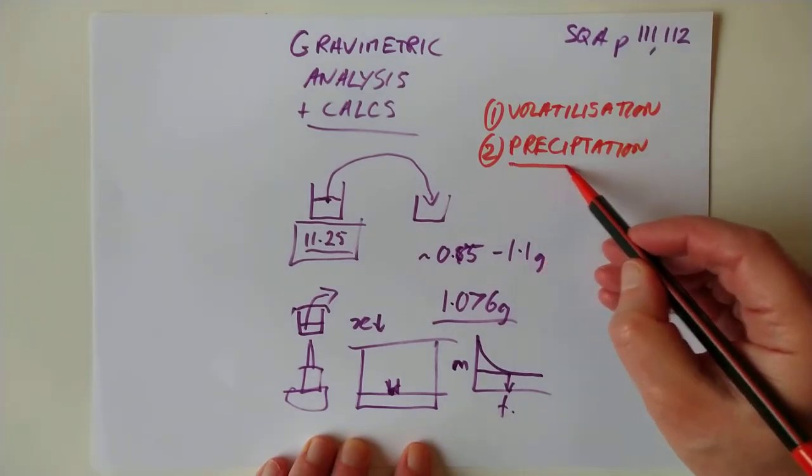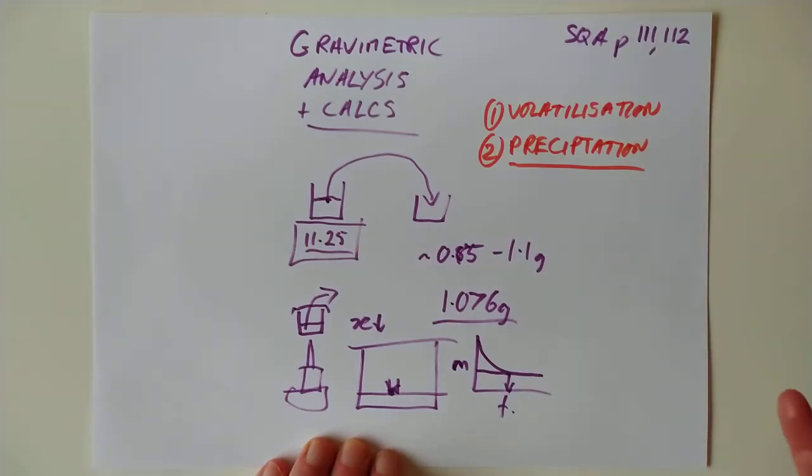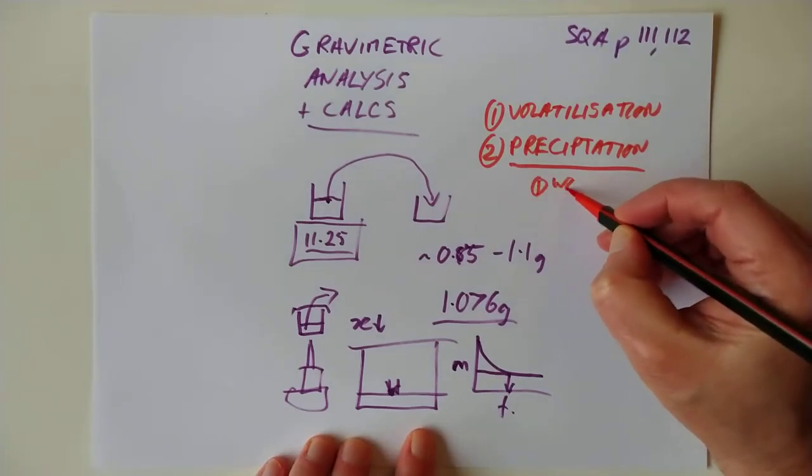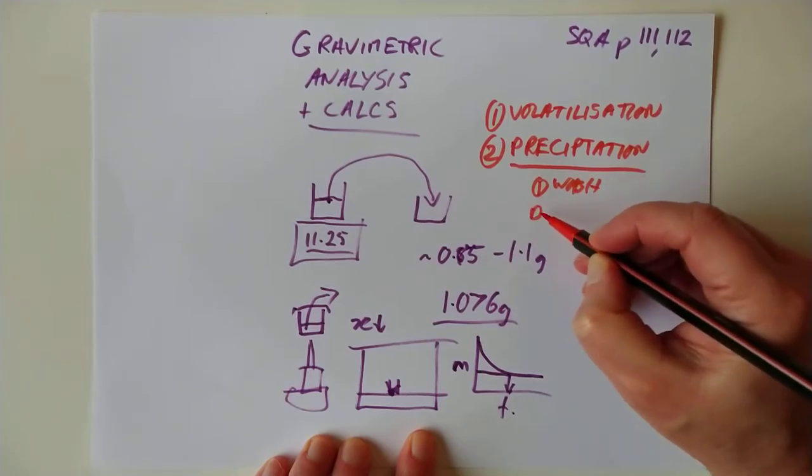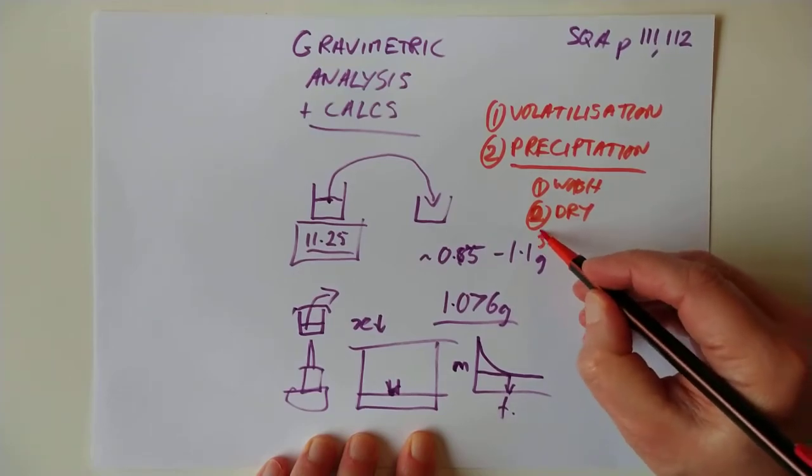He would add a chemical to it, which precipitated the chloride ions as silver chloride. So precipitation, I think that's spelled wrong. That might be another ion there. So basically what you're doing is taking soluble ions, converting them into a solid. And then at that point, you can, of course, weigh them.